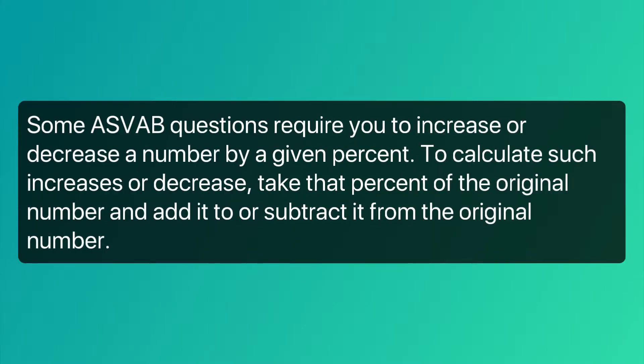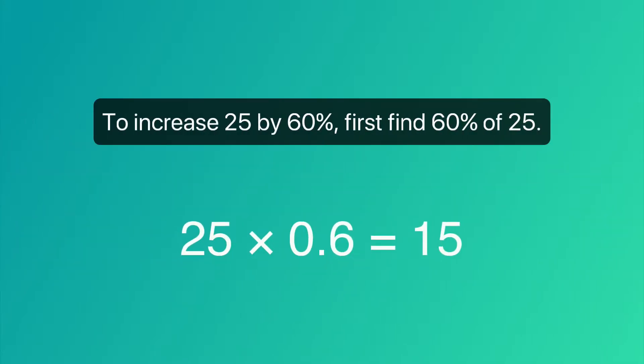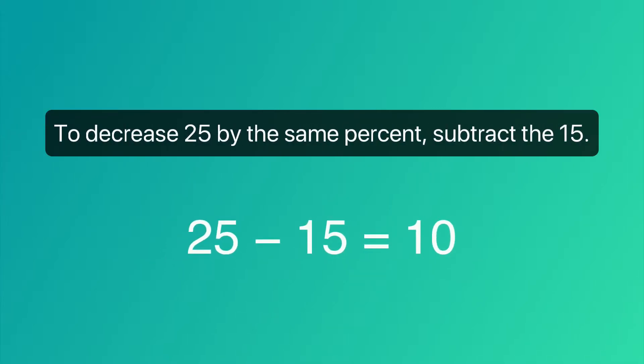Some ASVAB questions require you to increase or decrease a number by a given percent. To calculate such increase or decrease, take that percent of the original number and add it to or subtract it from the original number. To increase 25 by 60%, first find 60% of 25. Then add the result to the original number. To decrease 25 by the same percent, subtract the 15.